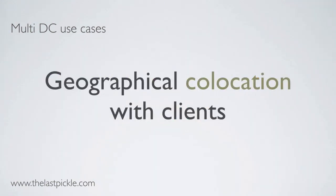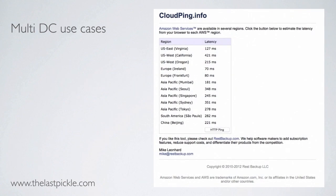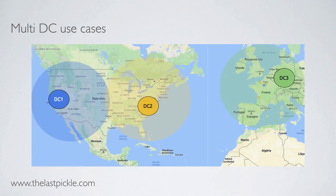Another classical use case is geographical collocation with clients. This is the ping times to the different regions of Amazon when I'm from France. Obviously, I would want to connect to one of the regions closest to me, which would be Ireland and Frankfurt. To achieve this, you would want to create different DCs for your cluster that will operate on specific parts of the world.